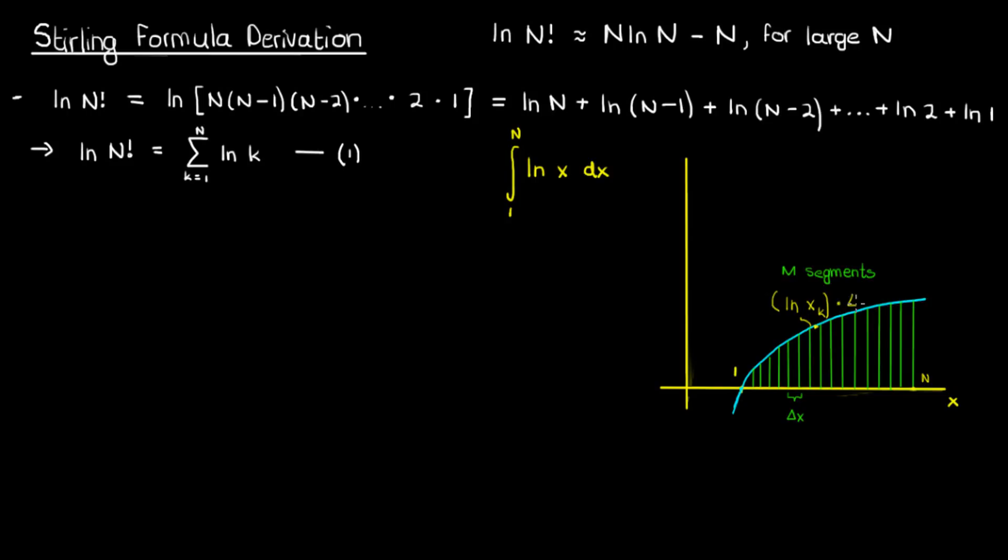Multiply the value of that function by the segment length delta x and repeat that process for all the other segments, then finally add the results. You're essentially finding the areas of these mini rectangles and adding those areas together to get the area under the curve from 1 to capital N.